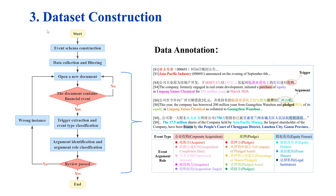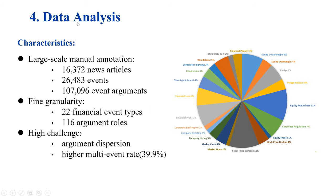The construction process of this dataset is illustrated in the figure on the left, and an example of data annotation is shown in the figure on the right. Our dataset is characterized by three main features: large-scale manual annotation, fine granularity, and high challenge.